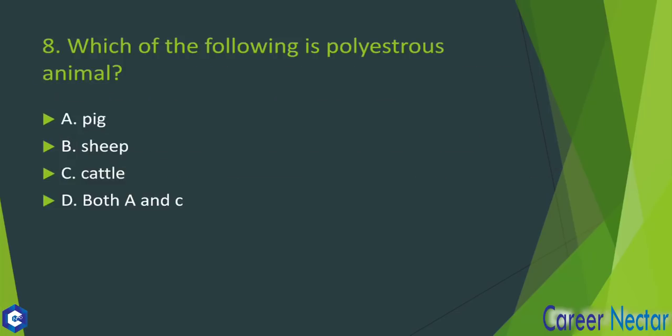Then we will talk about which of the following is a polyestrus animal. Polyestrus animals — those with estrus cycles throughout the year — include pig and cattle, whereas sheep are not polyestrus. So the answer to this question will be option number D: both A and C, which are pig and cattle. I have discussed polyestrus and seasonally polyestrus throughout the year.